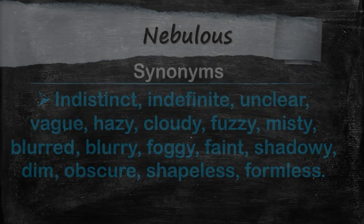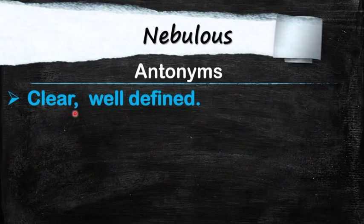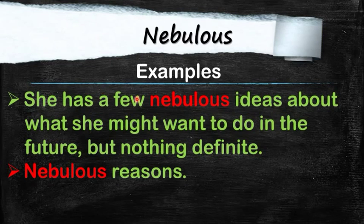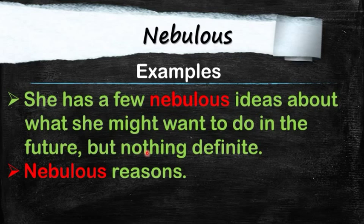And the antonyms are clear and well-defined. Now take a look at some example sentences to see how you can use it in your daily conversation. First example: she has a nebulous idea about what she might want to do in the near future, but nothing definite. Our next example is: nebulous reason.